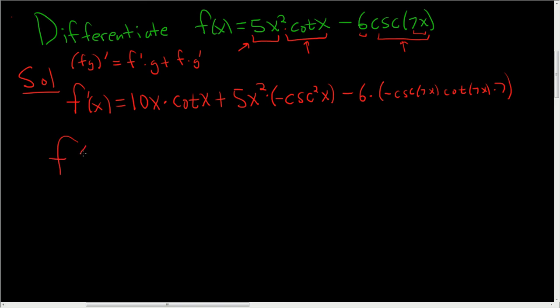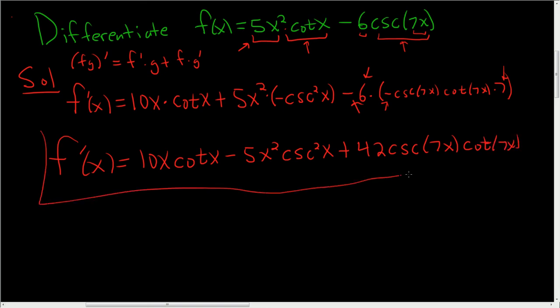That's it, let's just clean it up. So f prime of x, this will be 10x cotangent x minus 5x squared cosecant squared x. And then here we have a negative, a negative that's going to give us a positive. And the 6 and the 7 will give us 42. So 42 cosecant 7x cotangent 7x. And that is the answer.